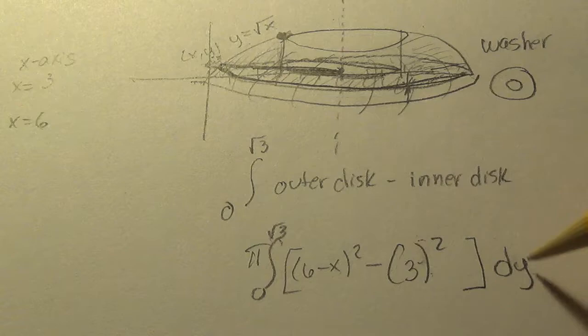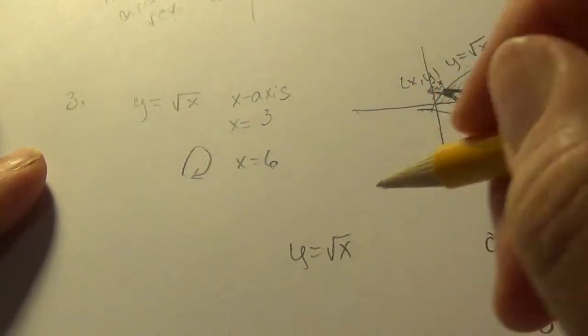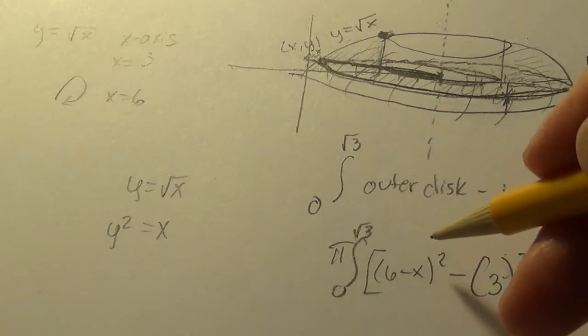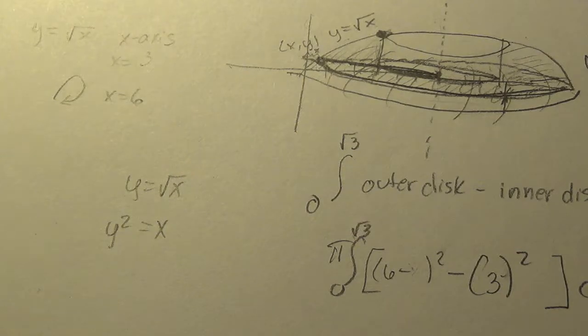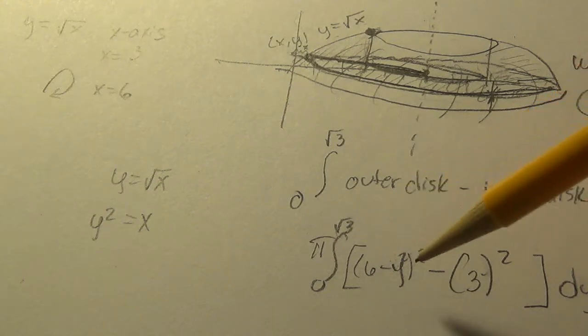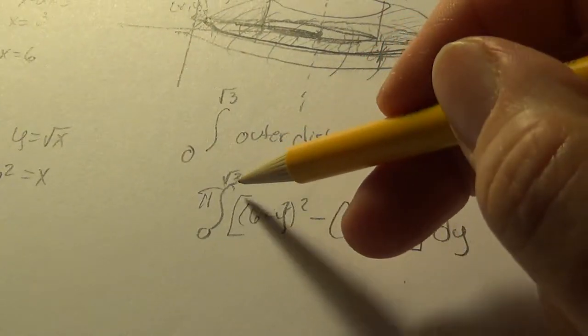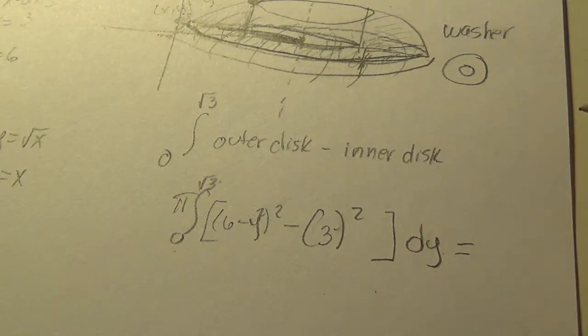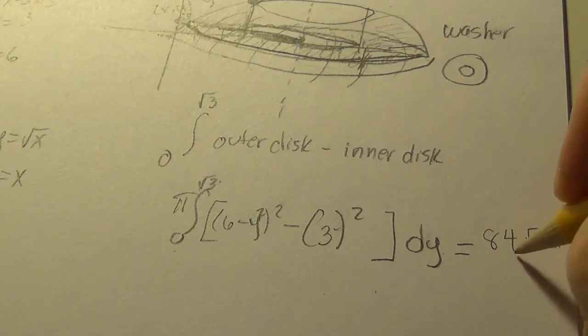Let's work in y, the original equation, y equals square root of x, can be written as x equals y squared by squaring both sides. So I'm going to rename x y squared. In order to complete that integral, I have to square this binomial, combine it with the minus 9, and then integrate and put in the upper limit of integration, subtract the lower. And when I do all that leg work, it comes out to 84 square roots of 3 pi over 5.